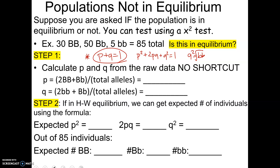So this is a third scenario. We've got the scenario where they tell you the population is in Hardy-Weinberg equilibrium and give you some information to find other values. We've got a scenario where it's not in Hardy-Weinberg equilibrium and you calculate P or Q the longer way from raw data. But in this third scenario, they're actually asking you to decide if the population is in Hardy-Weinberg equilibrium.